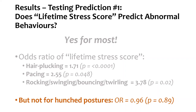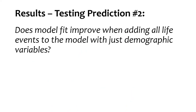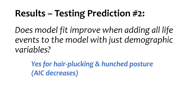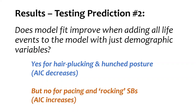For prediction two: does model fit improve when adding all life events to the model with just demographic variables? Yes, for hair plucking and hunched postures — AIC decreases when adding all life events. However, for pacing and the rocking subcategory, AIC increased after adding all life events, meaning the sum of life events is not a good fit for predicting their odds.